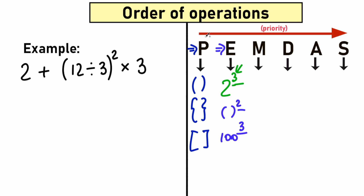As you can see, we go from P to E. We go step by step to the next part, from left to right in terms of priority. Higher priority means a left position, and lower priority means a position on the right. So on the left side we have higher priority, and on the right side we have lower priority.